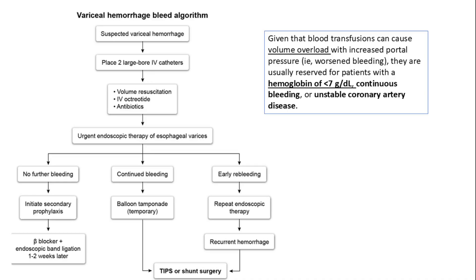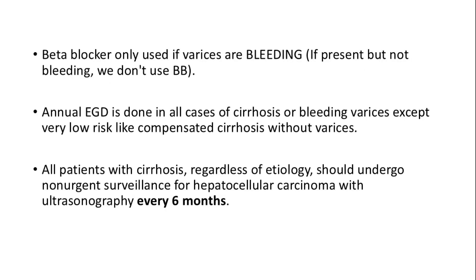Blood transfusions can cause volume overload with increased portal pressure — worsening bleeding — so they are usually reserved for patients with hemoglobin less than 7 g/dL, continuous bleeding, or unstable coronary artery disease. Beta-blockers are only used if varices are bleeding; if varices are present but not bleeding, beta-blockers are not used.